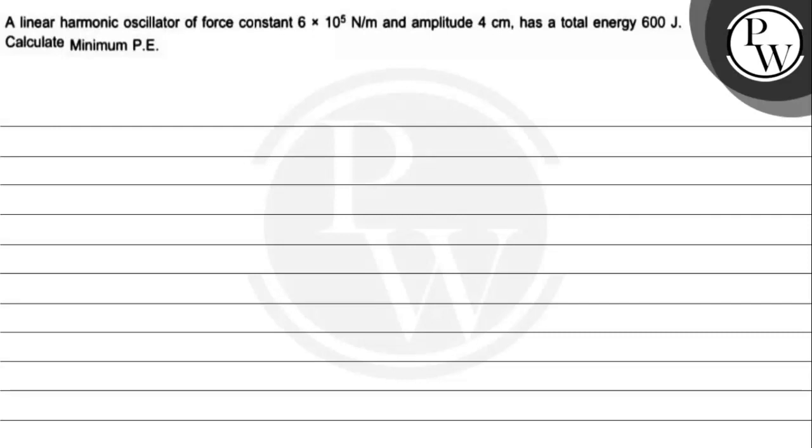Hello, let's see this question. Question says a linear harmonic oscillator of force constant 6 × 10⁵ Newton per meter and amplitude 4 centimeter has total energy 600 Joule. Calculate potential energy minimum.